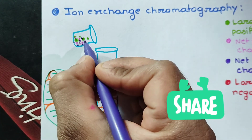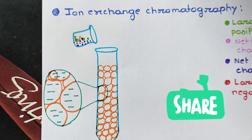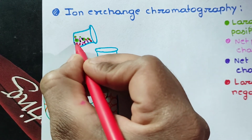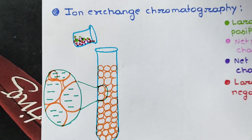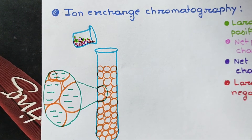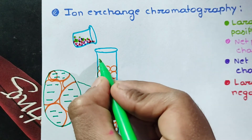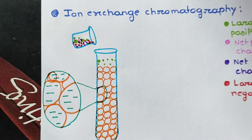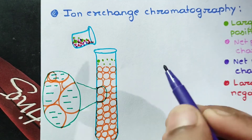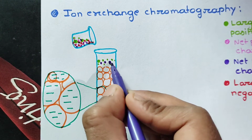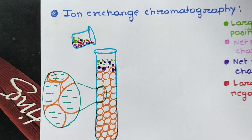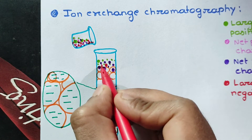The protein mixture contains four types: large net negative charge, net positive charge, net negative charge, and large net positive charge. So here the mixture of four types of proteins is present.